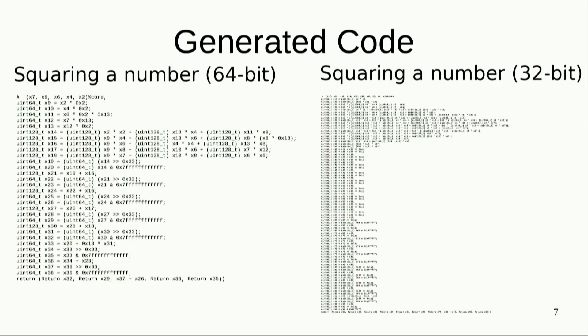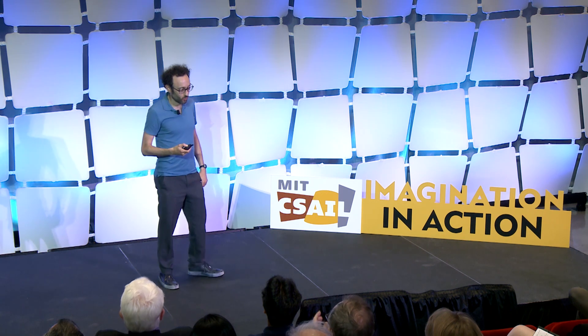This was clearly an opportunity to apply compiler technology, so that's what we did. We built a system that could automate what those experts were doing. It takes the same source program and generates one or the other of two different C programs — shown here in a small enough font that you won't be tempted to read them in detail — but from an art-appreciation perspective, they look pretty different even though they come from the same source code.